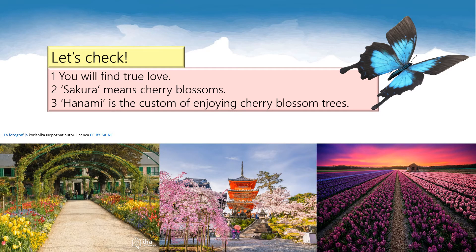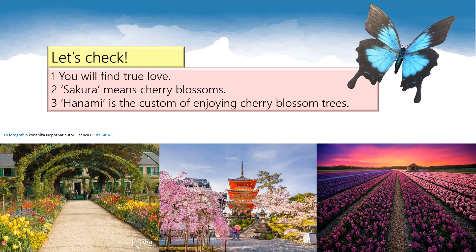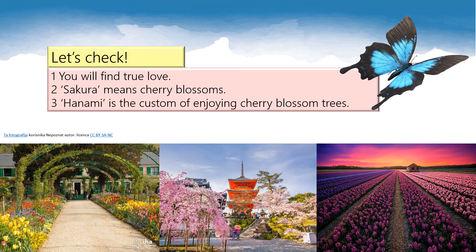And we're back. Let's check your answers. Answer number 1: you will find true love. Sakura means cherry blossoms. Hanami is the custom of enjoying cherry blossom trees. Great, isn't it? I'm sure you did a great job. Well done.